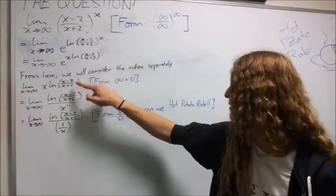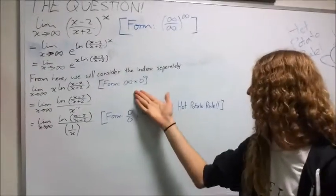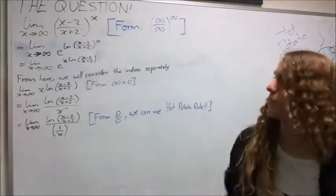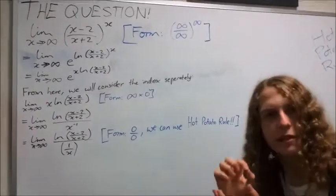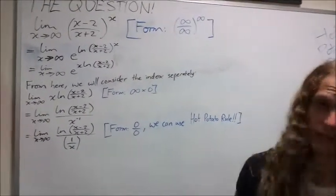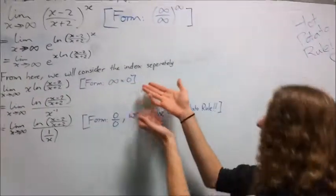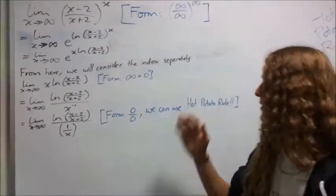x·ln[(x-2)/(x+2)]. That's in the form of like ∞ times 0. This ln of ∞/∞, it's really infinitely close to 1, and ln(1) is 0. So it's basically ∞ times 0. So we still can't use L'Hôpital's rule or anything.